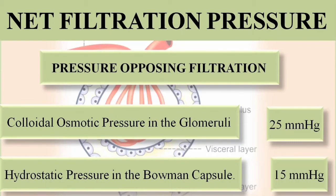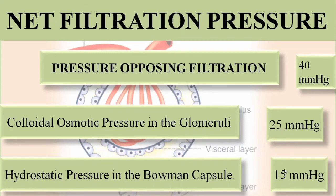Collectively, the opposing filtration pressures — colloidal osmotic pressure and hydrostatic pressure in the Bowman's capsule — add up to 40 mmHg (25 + 15 = 40). This is still less than the favoring filtration pressure of 60 mmHg, which is why filtration occurs.